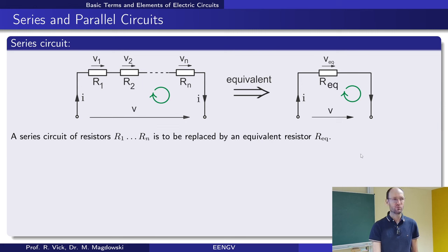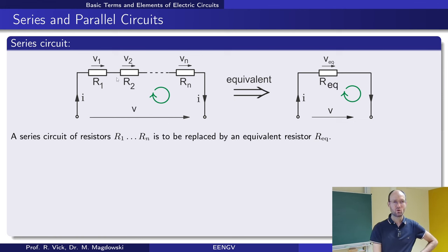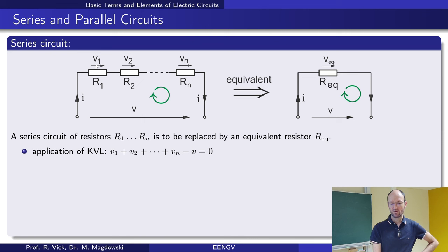What happens if we connect resistors in series or in parallel? For the series connection, we have a first resistor, second resistor, maybe a third, fourth, and so on, all connected in series. A series connection means we have the very same current going through all of these resistors. If we apply Kirchhoff's voltage law, the voltage drops across each resistor must all add up.